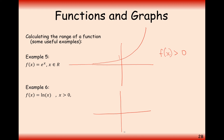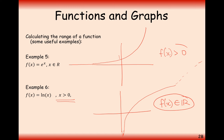The ln x graph carries on up to infinity on the right-hand side and down towards minus infinity as it approaches 0 from the right. The domain has to be x greater than 0 because you can never take the log of a negative number, so there's nothing on the left-hand side of the graph. The range, however, is all real numbers — the y-coordinates go up to infinity and down to minus infinity.